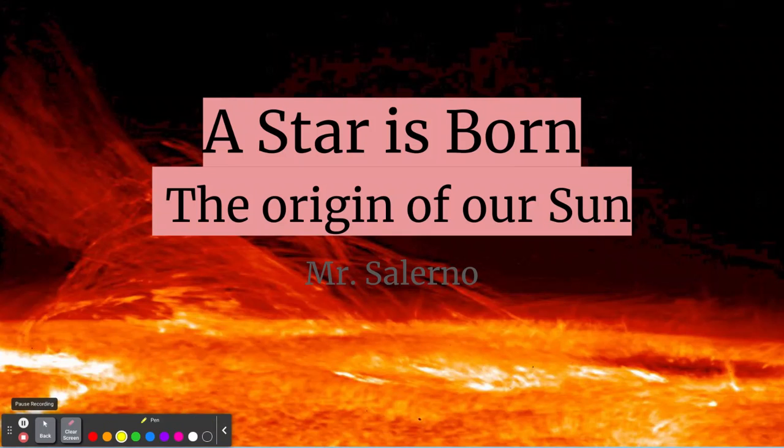Our Sun is a yellow dwarf, a G-type star. It's a small star, not smaller than a red dwarf, but it's a yellow dwarf. And it was born 4.6 billion years ago.